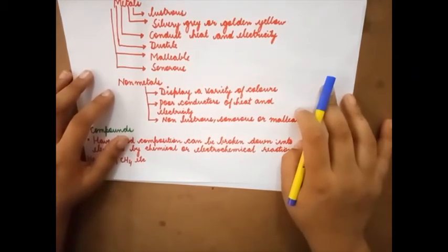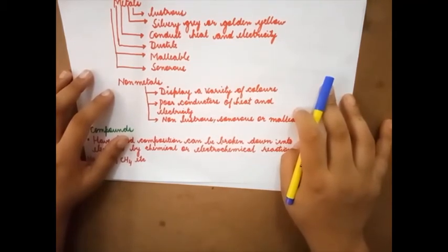And metalloids. Metalloids, their characteristic lie in between that of metals and non-metals. Example is germanium.